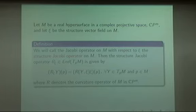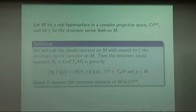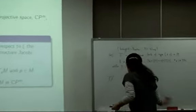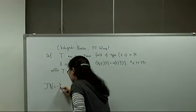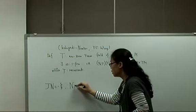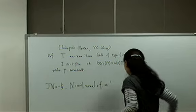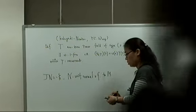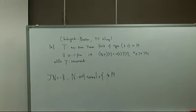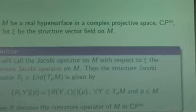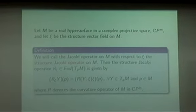Let M be a real hypersurface in complex projective space and let ξ be the structure vector field on M. Here, the structure vector field is defined by the equation ξ = -JN, where N is a unit normal vector field. We call the Jacobi operator on M with respect to this vector the structure Jacobi operator.